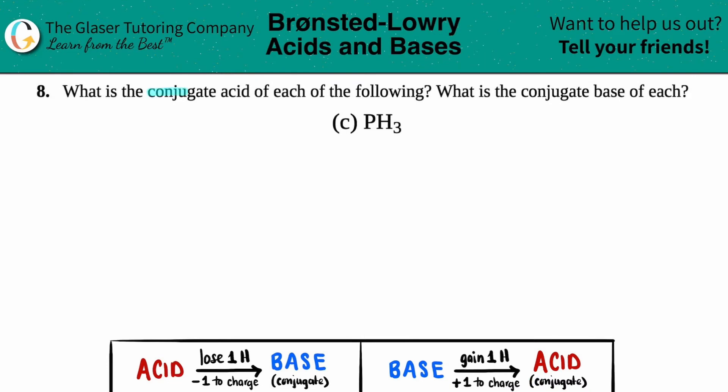Number eight, what is the conjugate acid of each of the following, and what's the conjugate base of each? Then we have letter C. So in this case, we just have to find the conjugate acid and conjugate base of PH3.